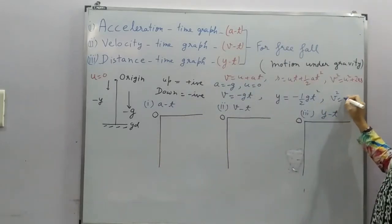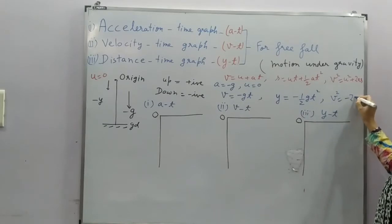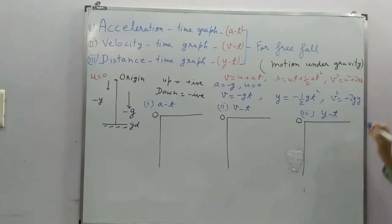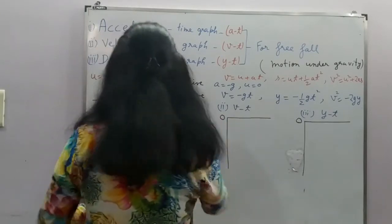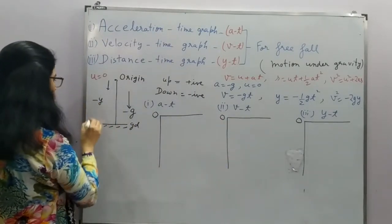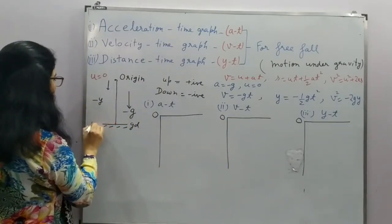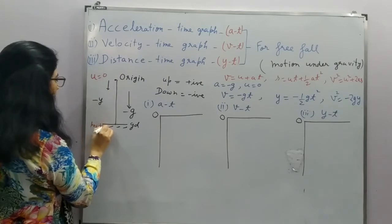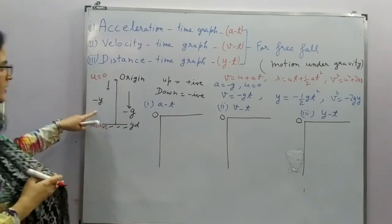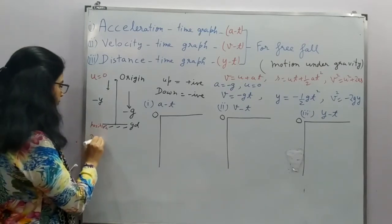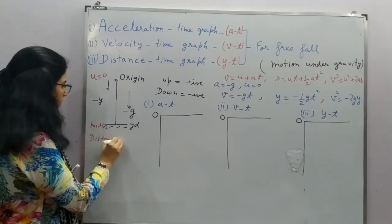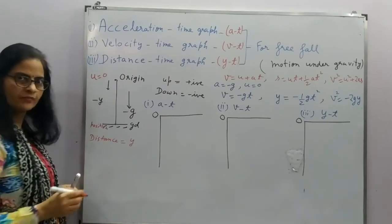And then V square is equal to, this is 0, minus 2g. How much is the distance here? Distance is Y. We are considering here position in this case. Here, this is the position with respect to O. So that's why this minus Y is written. But if we talk about the distance, this distance will be Y.